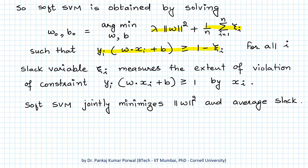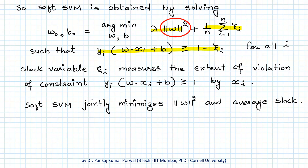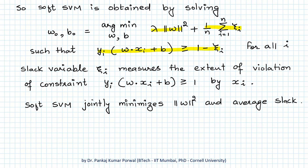Here, λ is a hyperparameter that controls the relative importance given to the hard SVM objective versus the average slack. For a large value of λ, the hard SVM part dominates and the hyperplane is less strict about slack. For small λ, more importance is given to minimizing the average slack, making the hyperplane stricter about constraint violations. The resulting hyperplane is called the soft support vector machine.